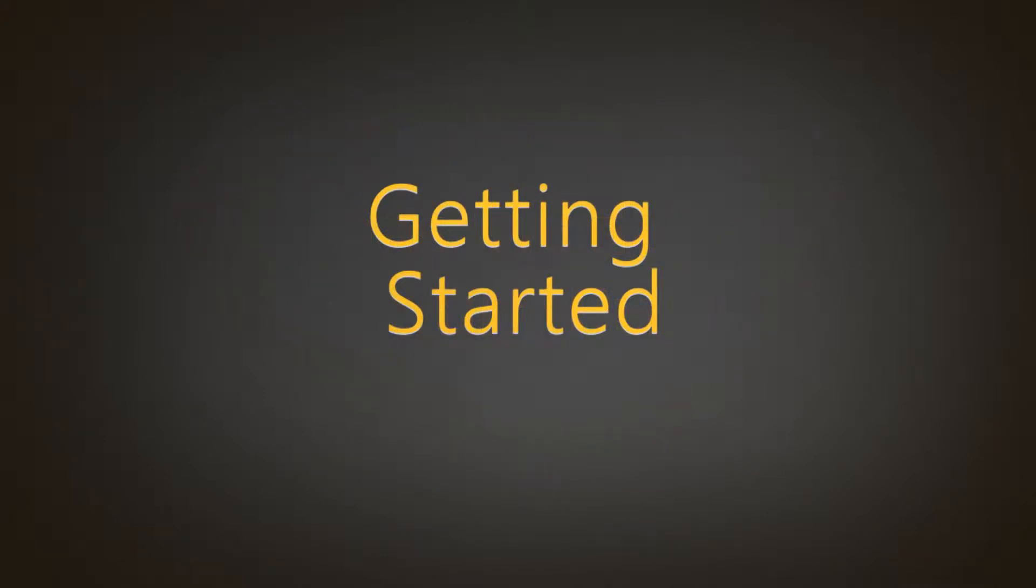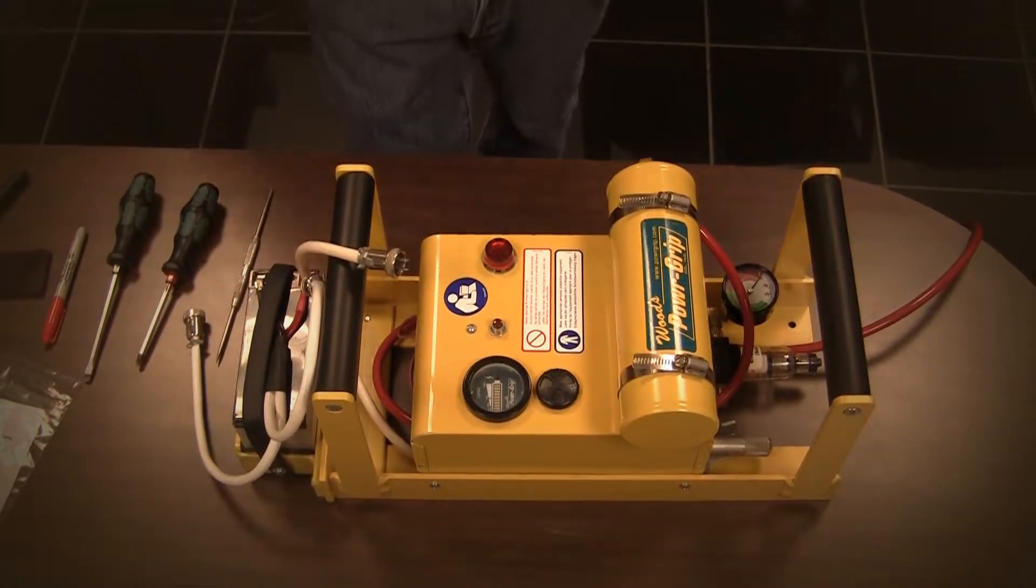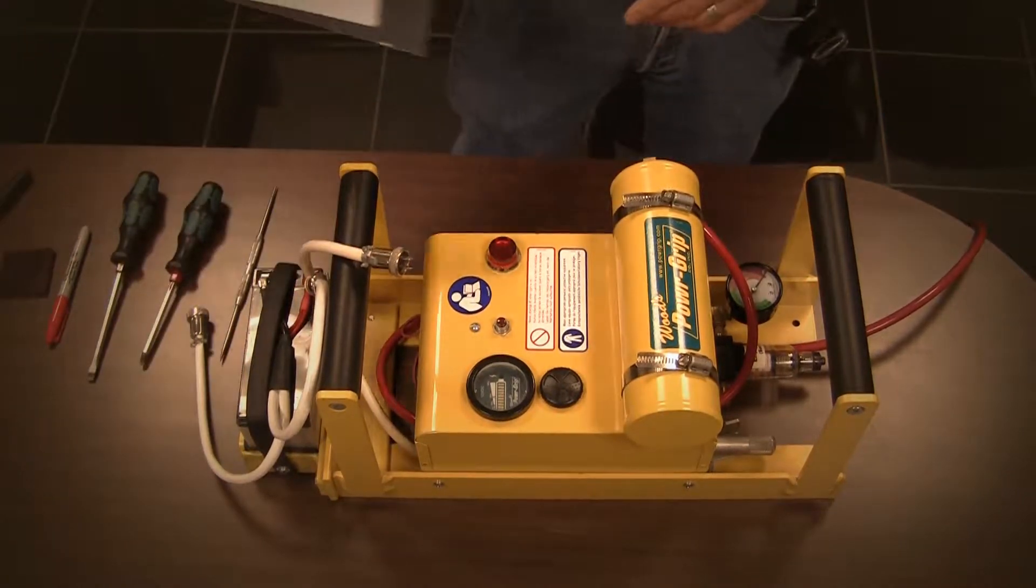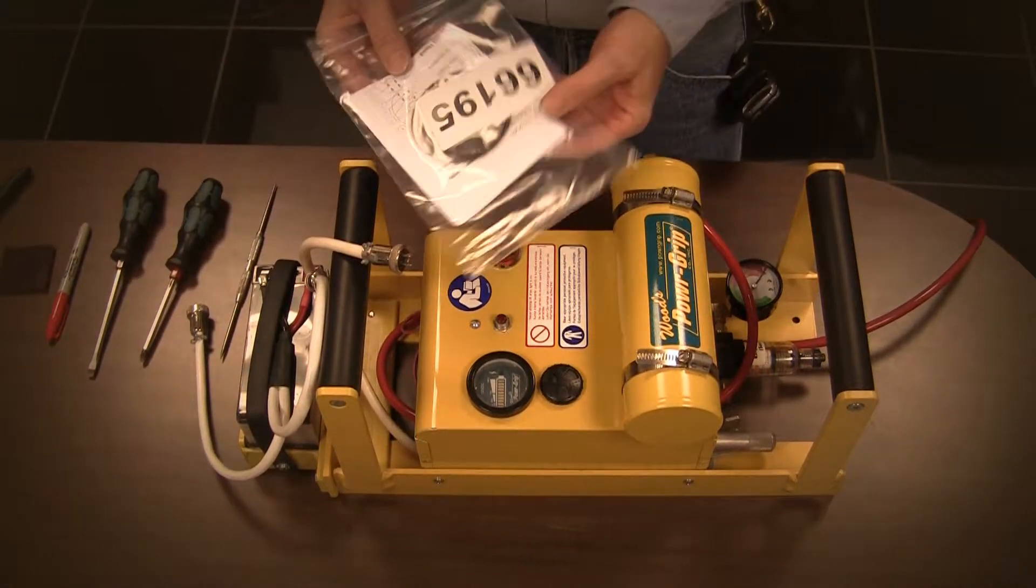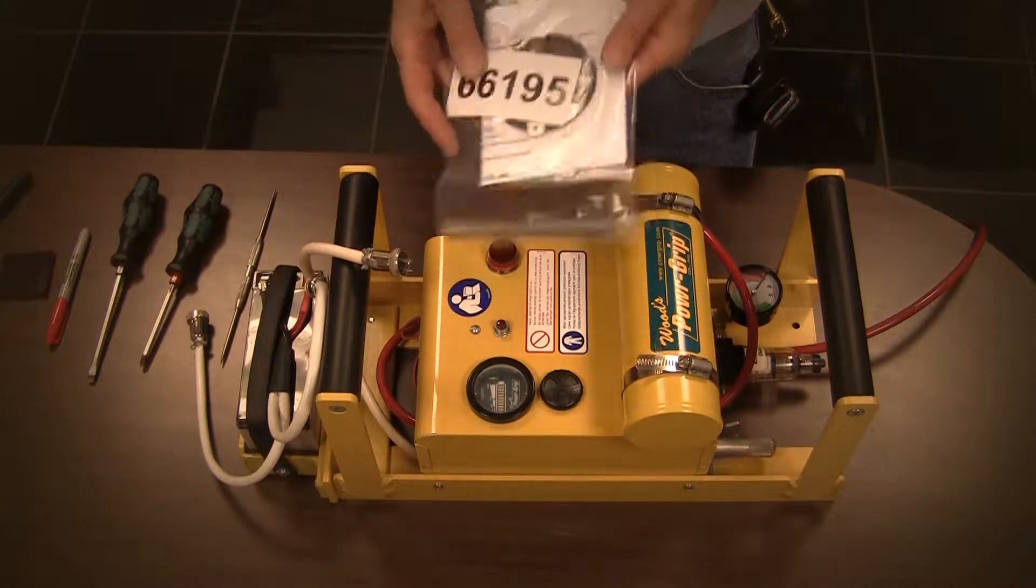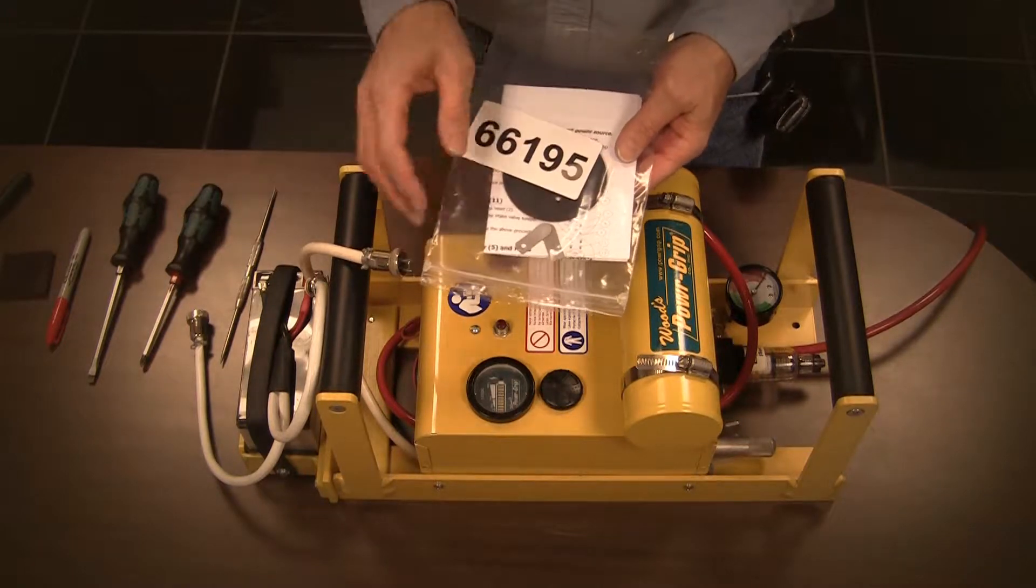Getting started. In order to rebuild this vacuum pump, you will need the correct repair kit, Woods Power Grip Stock Number 66195. This kit comes with two flap valves, a head gasket, and a diaphragm.